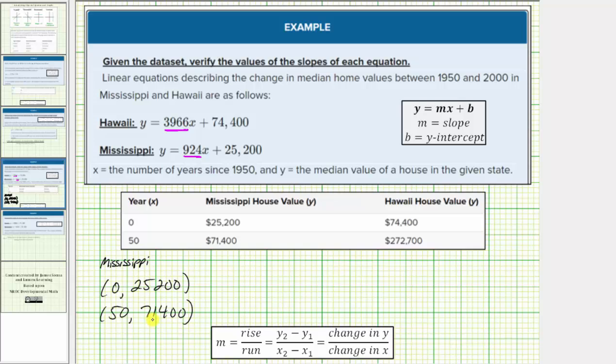Now that we have two ordered pairs for the linear equation, we can use the slope formula provided here to verify the slope is equal to 924, where the slope is equal to the ratio of the change in y to the change in x. To keep things organized, let's label the first ordered pair x sub 1 comma y sub 1, the second ordered pair x sub 2 comma y sub 2.